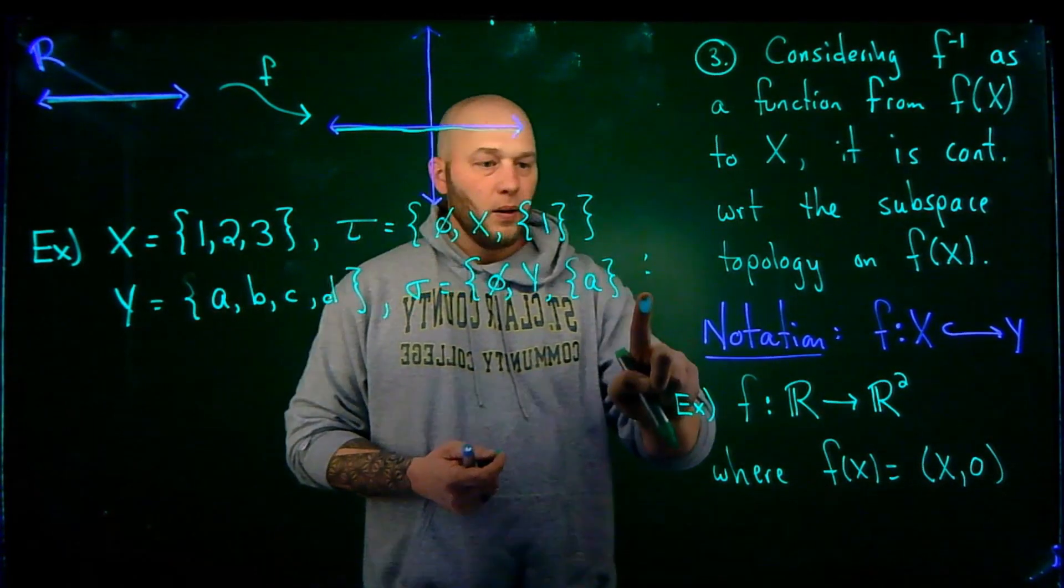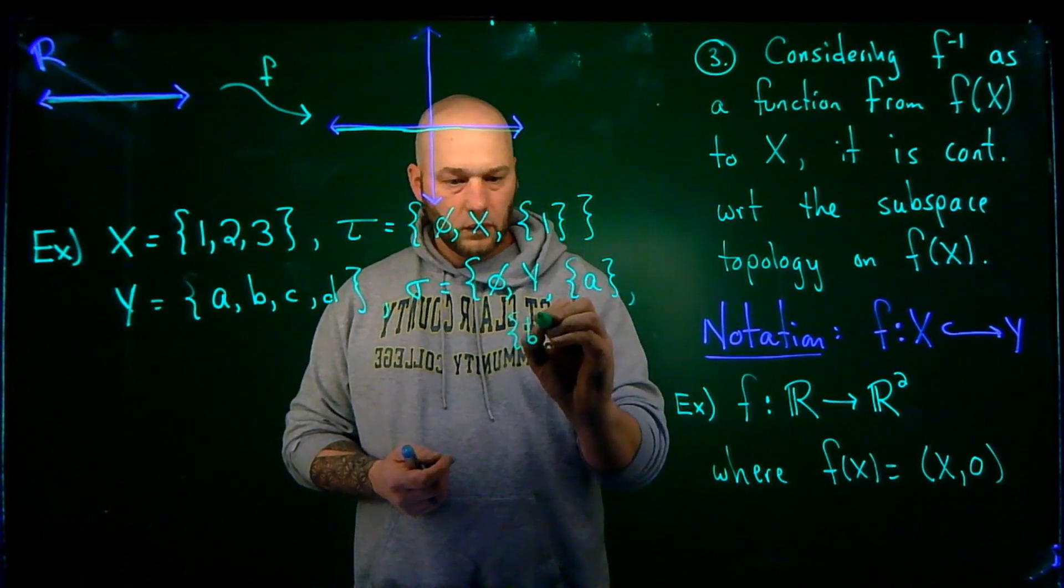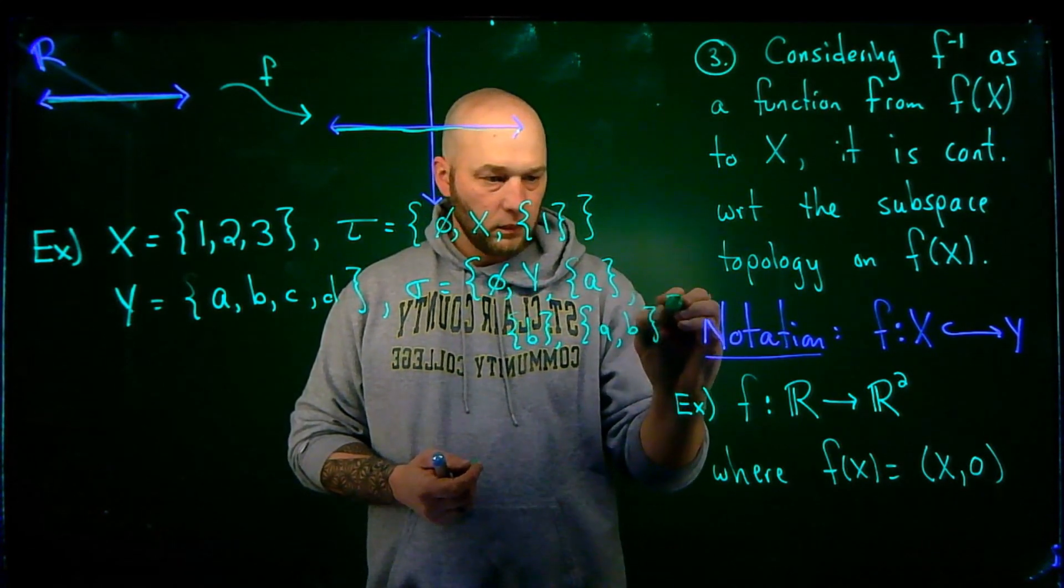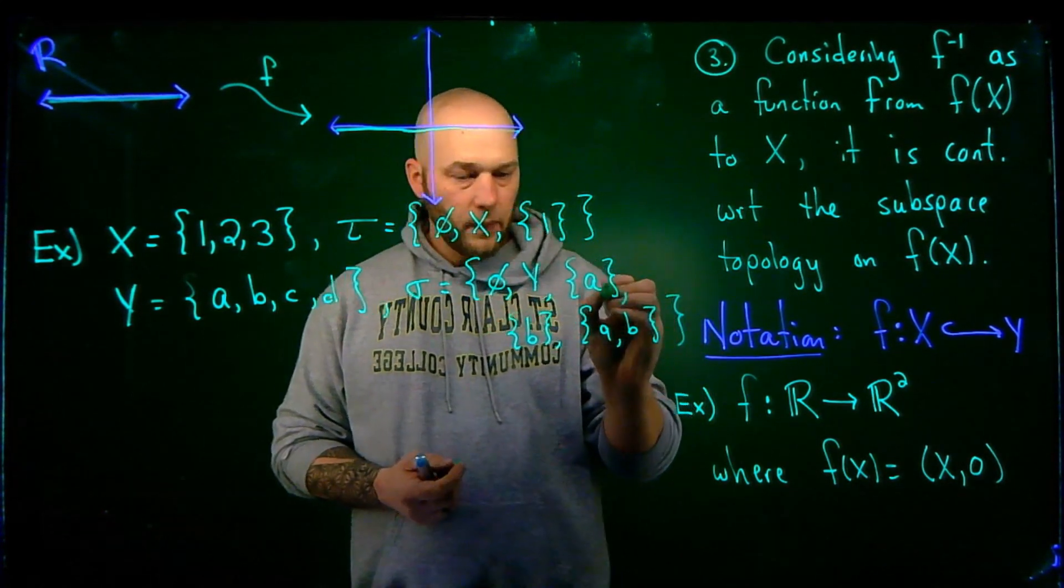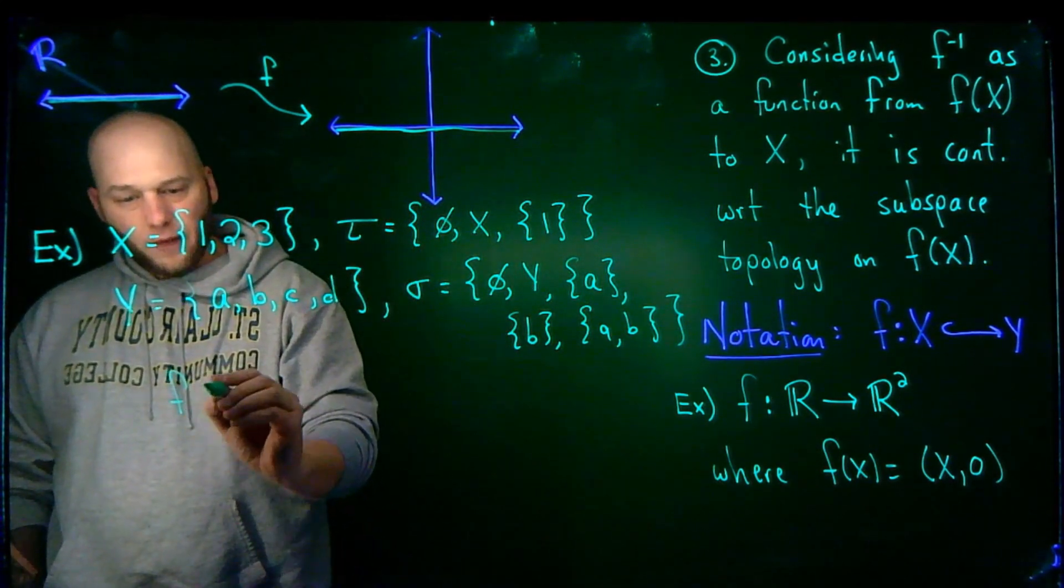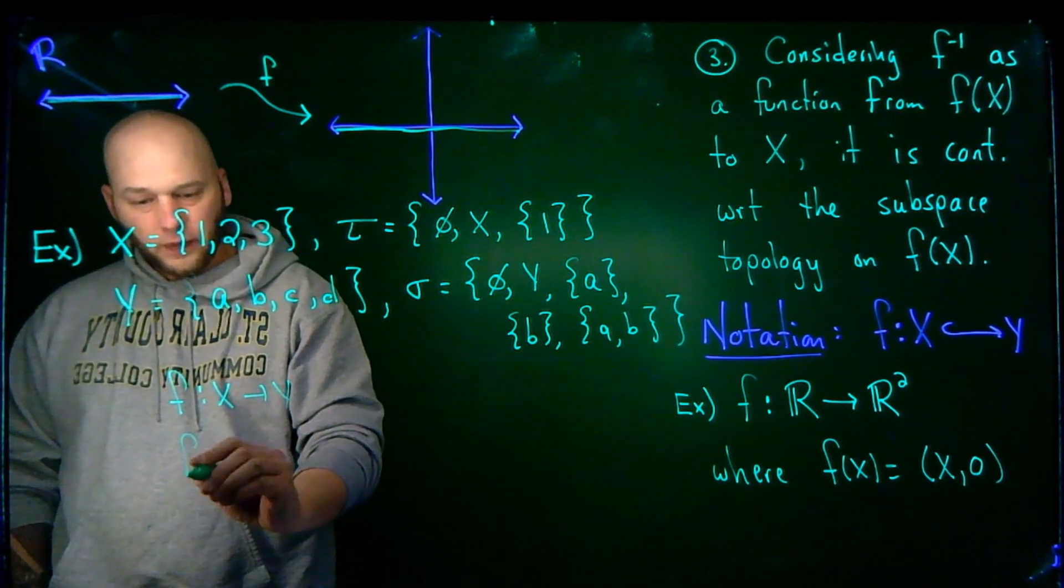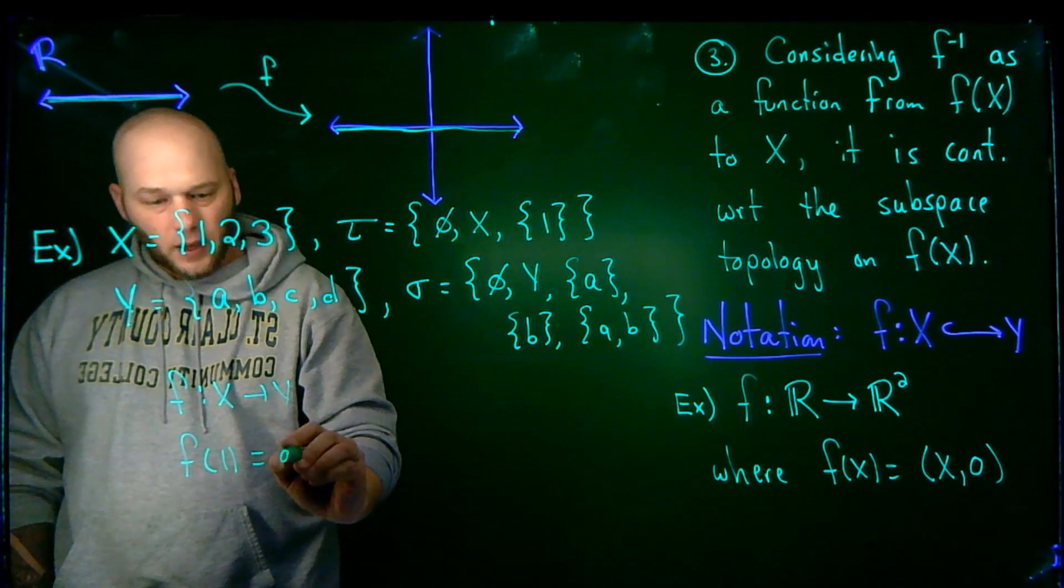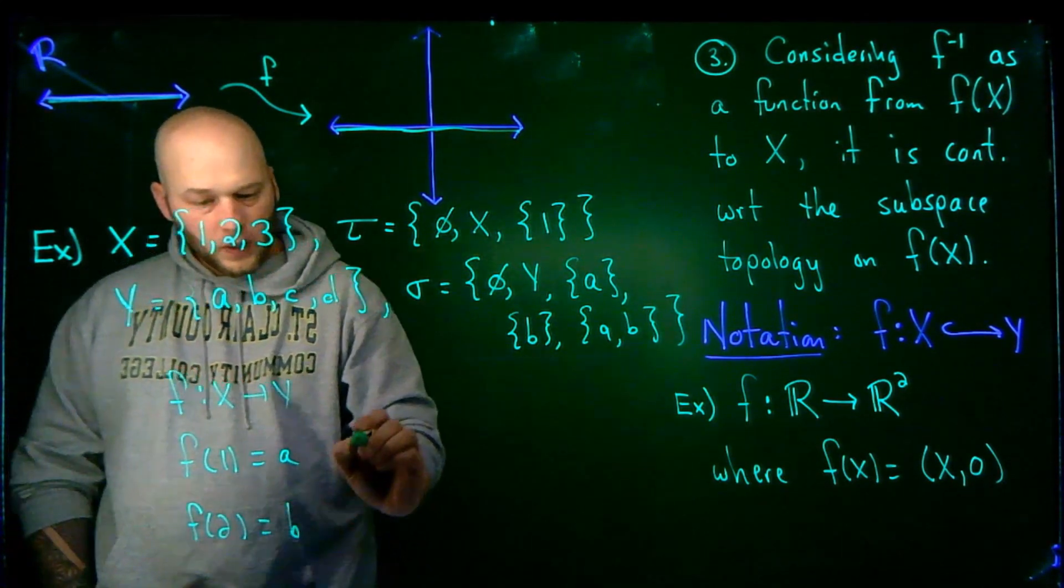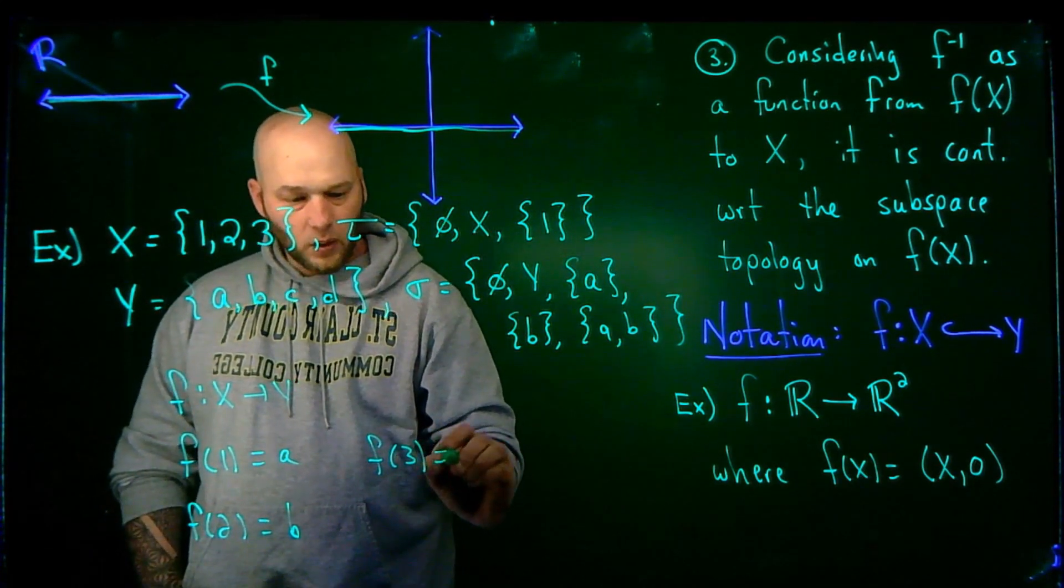Actually, let's add some more to that. So A, and then let's do B, and then AB. And then I also define the following function. I'm going to say F goes from X to Y as follows. F of 1 is A. F of 2 is B. F of 3 is equal to C.